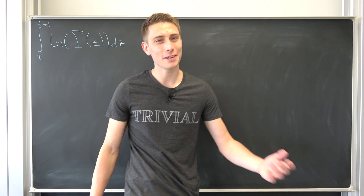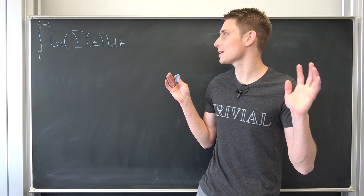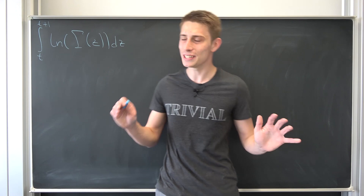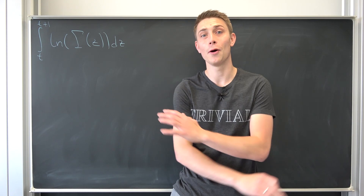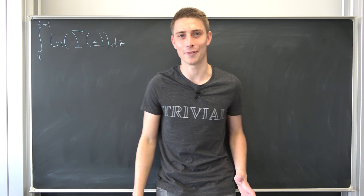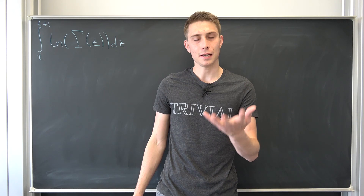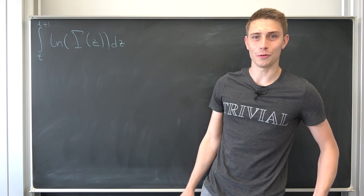Good morning fellow mathematicians, welcome back to another video. Today we are going to do something pretty damn cool — something you're never going to see ever again because, as far as I'm concerned, this kind of integration technique is really unique when it comes to proving this identity that we are going to derive today. You should totally grab your notes. This is called Raabe's formula for the gamma function, and it's going to use a few pis, a few natural logs.